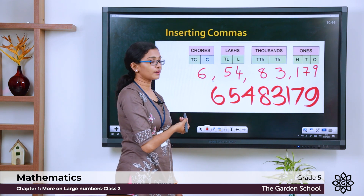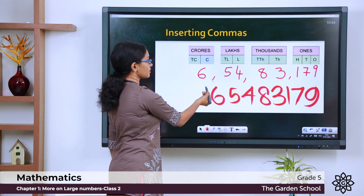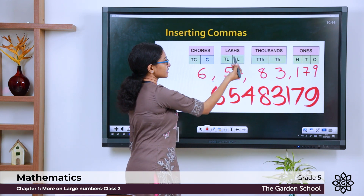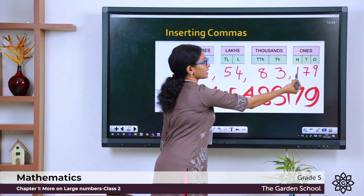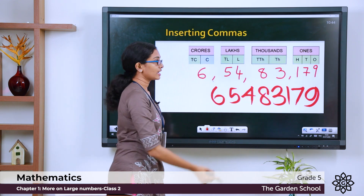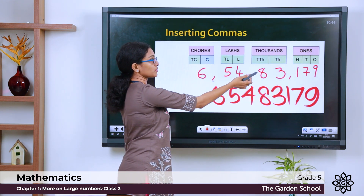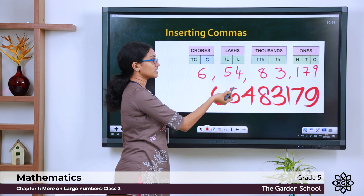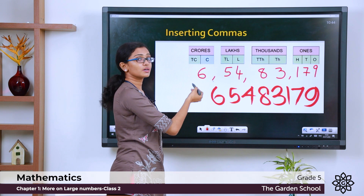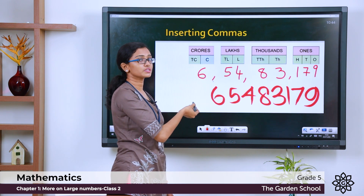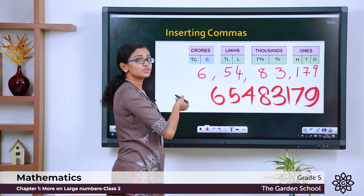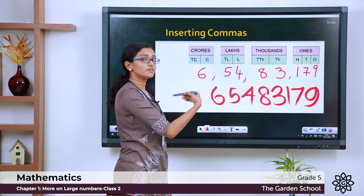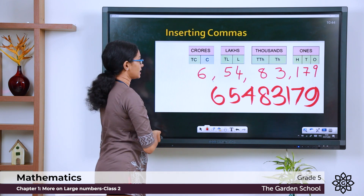Now let us try reading this number. So this number is 6 crore 54 lakh 83,179. In the 1s period alone, we have to read the place value of each digit. But if 0 comes in any place, the place value is 0 itself. We do not use the word zero in between while reading a number. We have to read the place value of all the other digits instead.